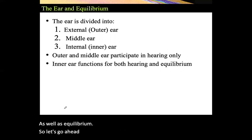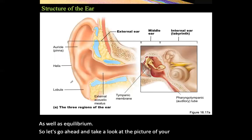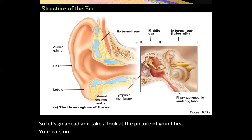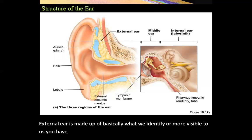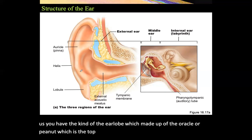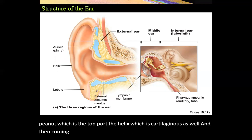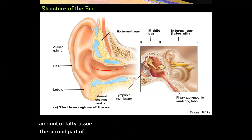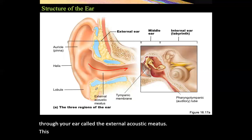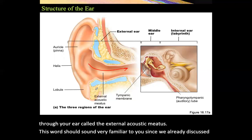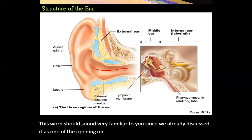Looking at a picture of the ear, the external ear is made up of what is visible to us. You have the ear lobe, which includes the auricle or pinna — the top part — and the helix, which is cartilaginous, coming down to the lobule, which contains a significant amount of fatty tissue. The second part of the external ear is where sound travels through, called the external acoustic meatus — a term already discussed as an opening on the side of the skull associated with the temporal bone.